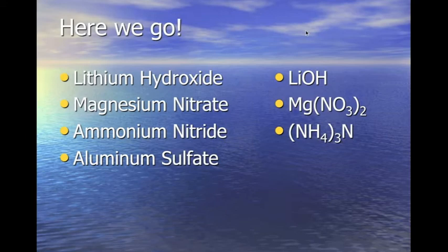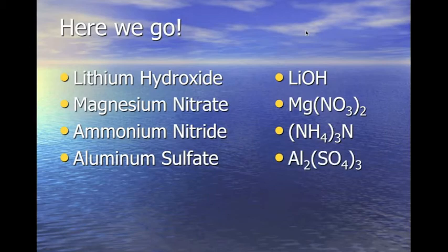And then we have aluminum sulfate, where aluminum is the metal and sulfate is SO4. We crisscross those and bring the three down and the two over here.